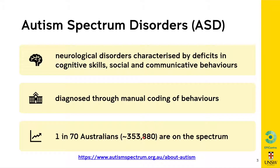Autism spectrum disorders, or ASD, are neurological disorders characterized by deficits in cognitive skills, social and communicative behaviors. They are currently diagnosed through manual coding of behaviors, mainly by clinicians. In Australia, 1 in 70 people, or around 354,000, are on the spectrum.